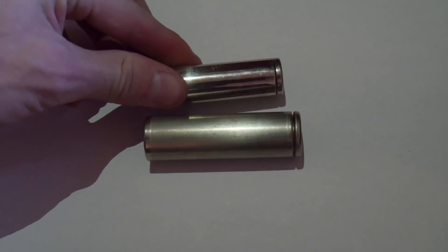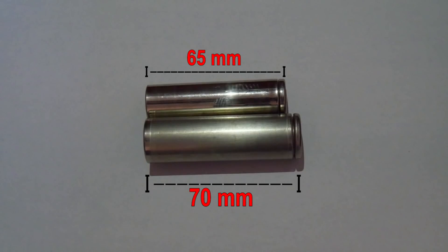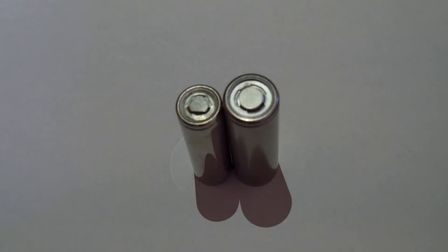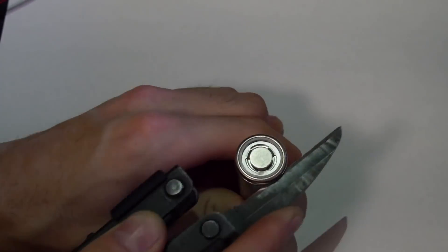When compared to the Model S cell, we see that the 2170 Model 3 cell is about 5mm taller and 2mm wider than the 18650. By this metric, the Model 3's cells should have 30% more internal capacity. Now let's open it up to find out.